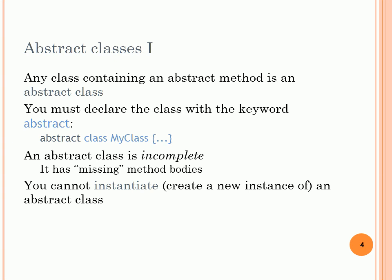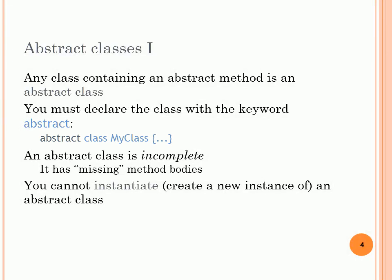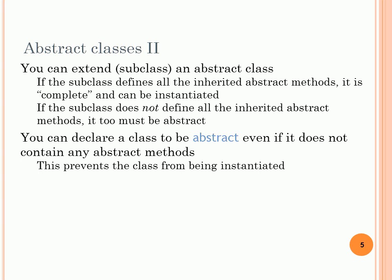What is an abstract class? A class containing at least one abstract method is considered an abstract class. The syntax is: we add the keyword 'abstract' before the keyword 'class', then the class name. An abstract class is incomplete — it has some missing method bodies — so we cannot instantiate any object from an abstract class. After creating the abstract class, you can extend it. If the subclass defines all the abstract methods of the superclass, you can create objects from that subclass.